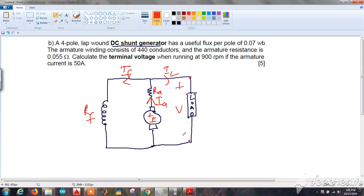He has already given the values: the armature current Ia is 50 amperes, and the armature resistance Ra is 0.055 ohms.